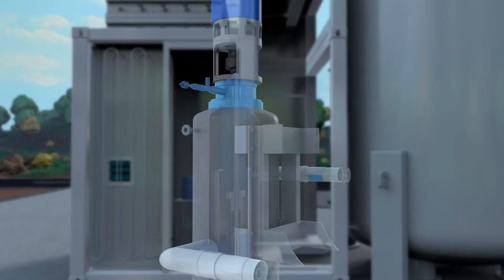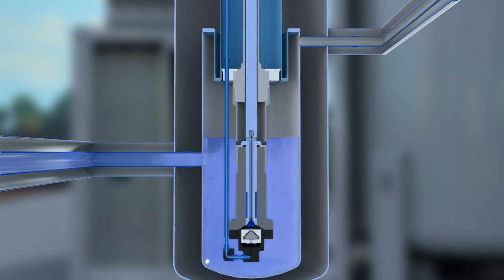Here is how the Cryo Pump works. From the storage tank, the pump is supplied with liquid hydrogen at minus 253 degrees Celsius.